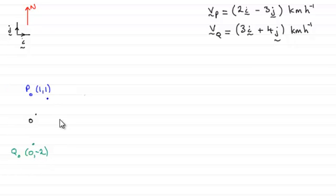Okay, so with that marked on, let's mark on the velocity vectors for P and Q. So if we start with P, the velocity of P is going to be a vector like this, 2i minus 3j. And for Q, we've got 3i plus 4j.